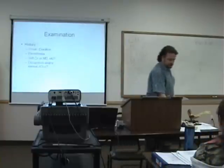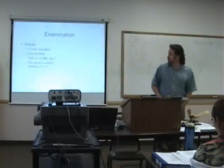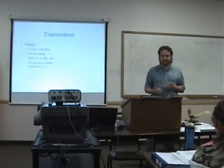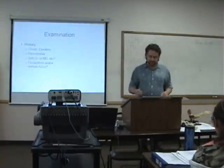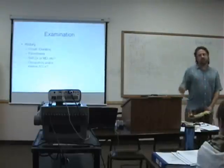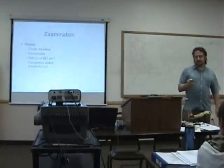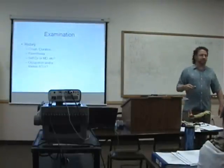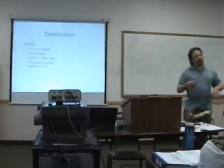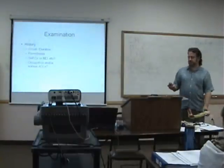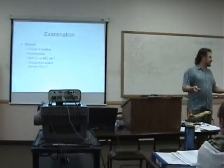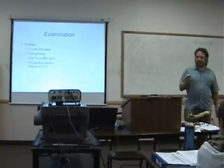We're going to get started on the examination of the forearm, wrist and hand. Ask all your standard questions. You're going to focus on whether it's an acute traumatic injury or repetitive trauma, and if there are any signs of neurological problems — numbness, tingling, weakness, things like that.